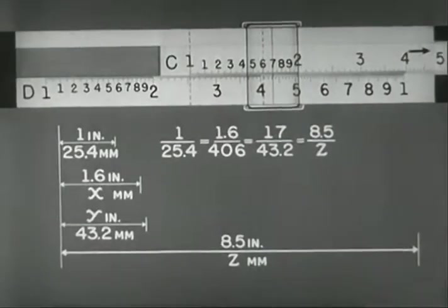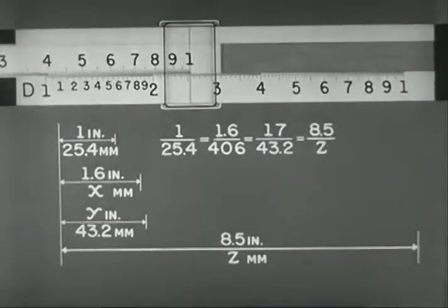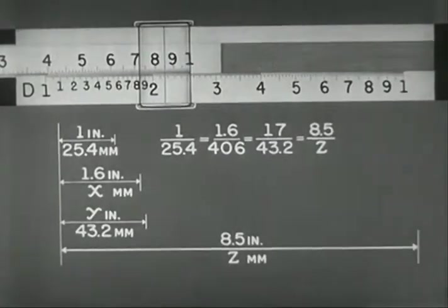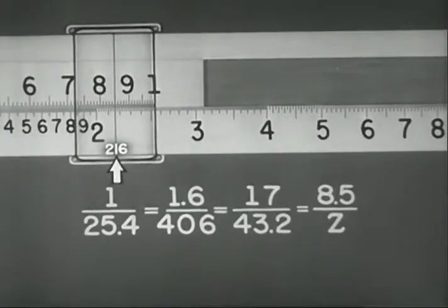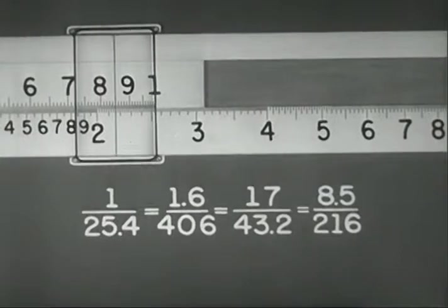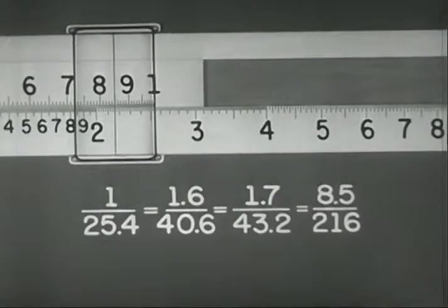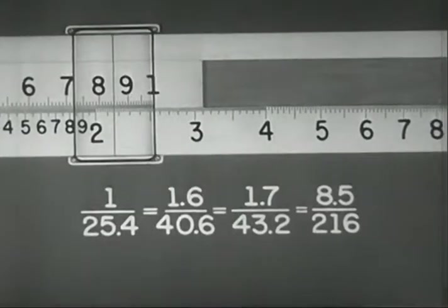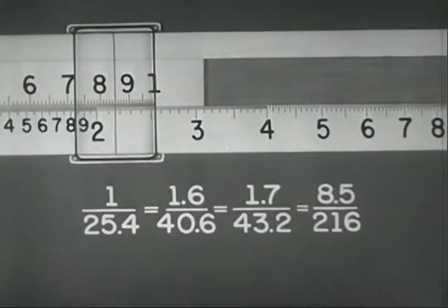Now, since 8.5 is off the body, we must shift to the other index. Set the hairline to 8.5 on C, and read z as 216 on D. Again, placing decimal points in terms of the problem, we have 1 is to 25.4, as 1.6 is to 40.6, as 1.7 is to 43.2, as 8.5 is to 216.